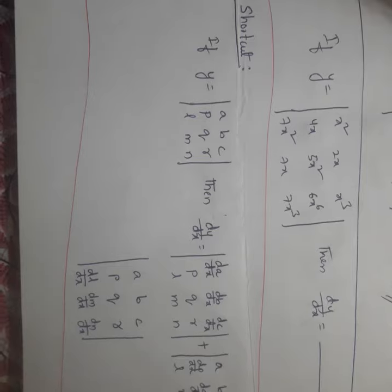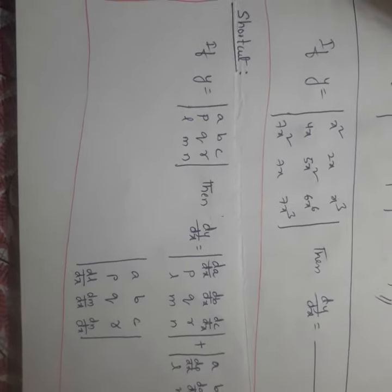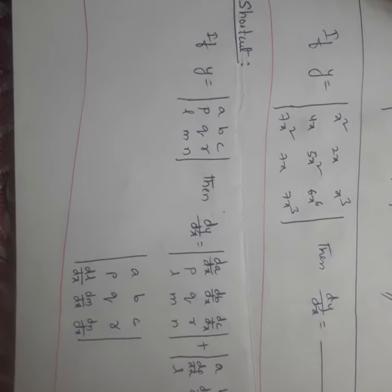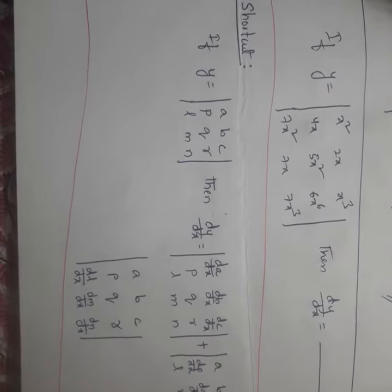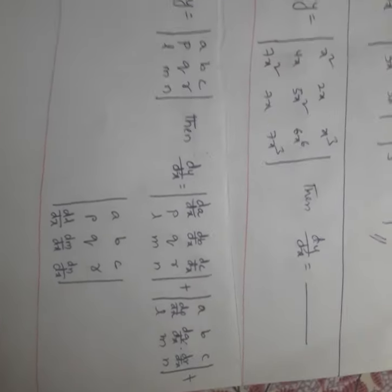If y is equal to the modulus |a, b, c, p, q, r, l, m, n|, then dy/dx is equal to the modulus of |da/dx, db/dx, dc/dx, p, q, r, l, m, n| plus